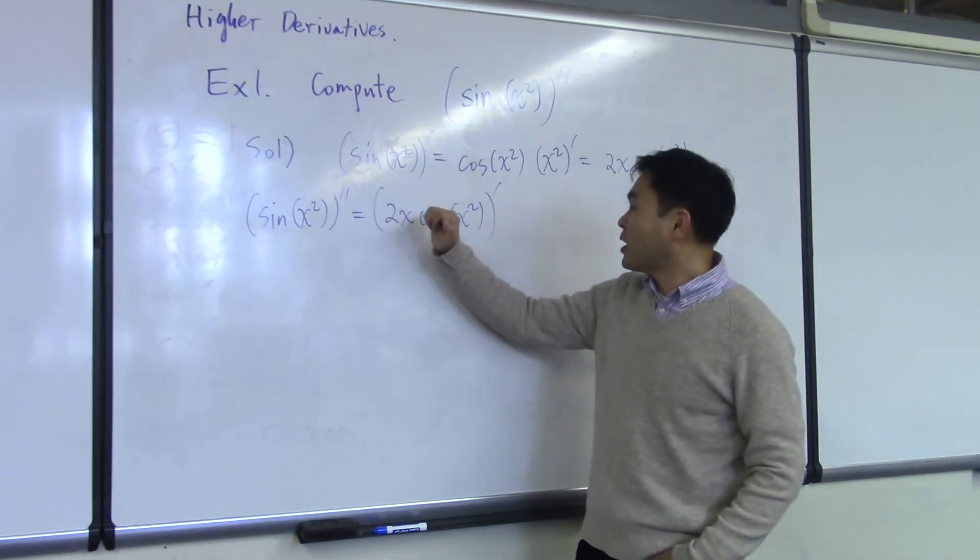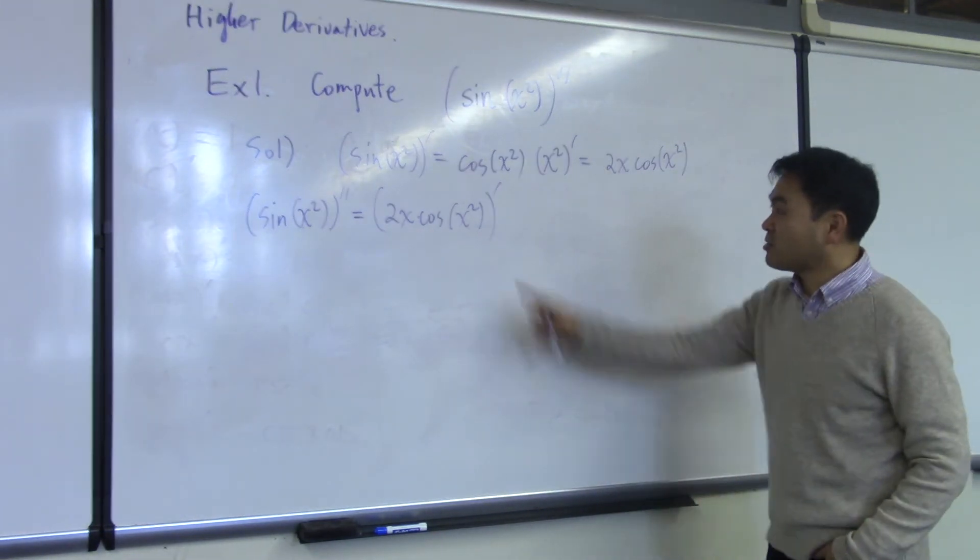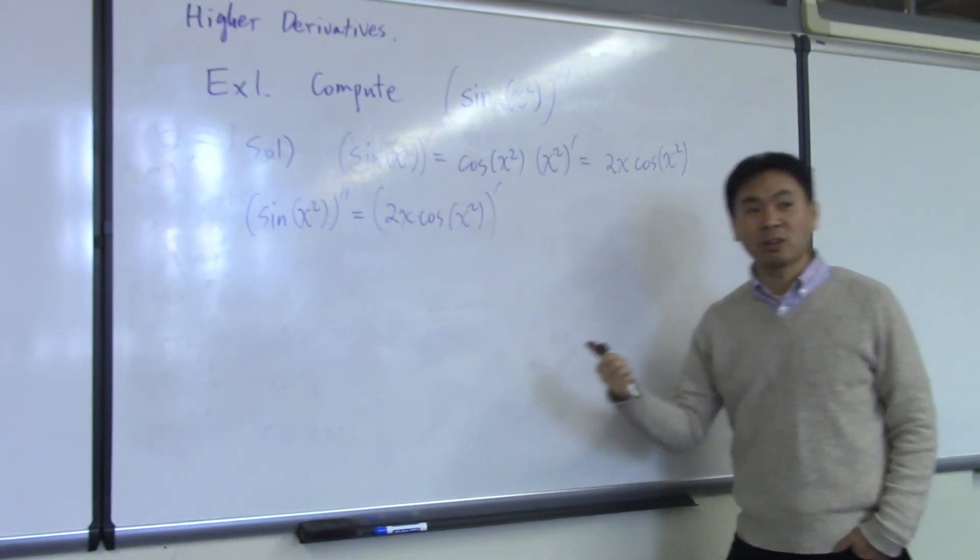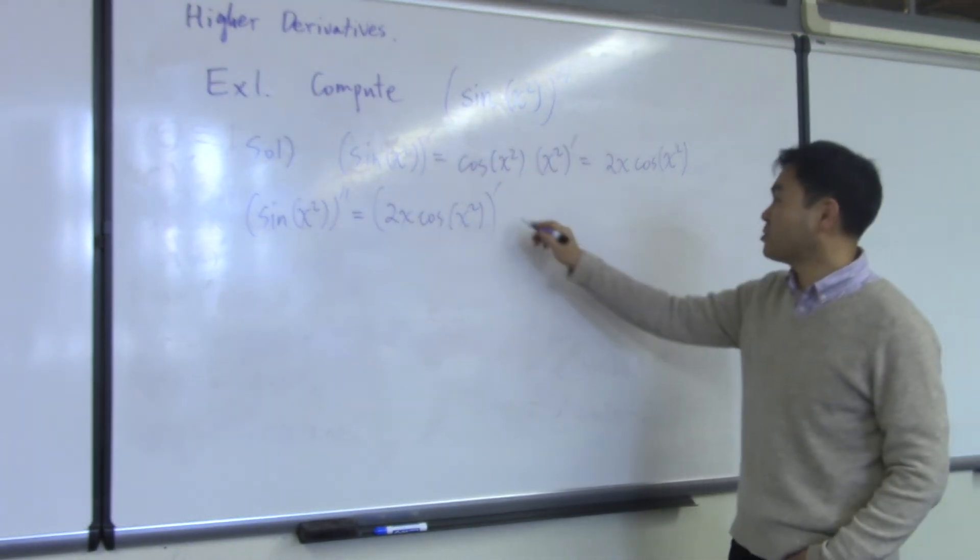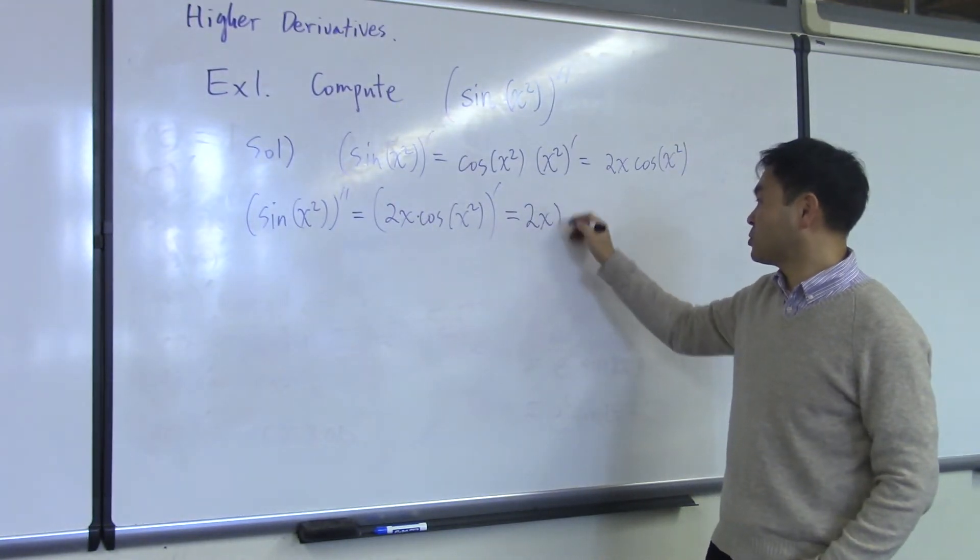However, this time you have a product and a nested function multiplied together, so you need to use both the product rule and the chain rule. Let's do that. This is a product rule, so apply the product rule.